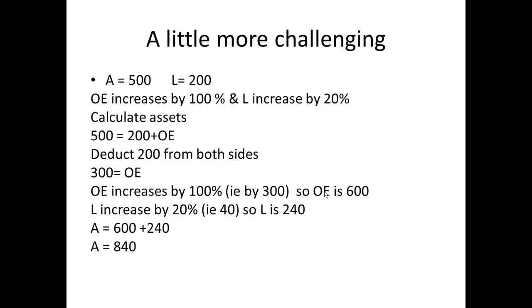$500 equals $200 plus owner's equity, i.e. assets of $500 equals liabilities $200 plus owner's equity. We can deduct $200 from each side. And we end up with $300 equals owner's equity. So owner's equity equals $300. We're now told owner's equity increases by 100%. 100% of $300 is $300. So owner's equity becomes $300 plus $300. So owner's equity is $600.